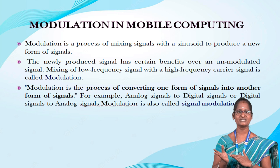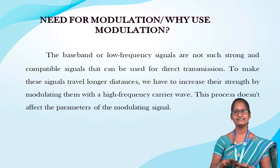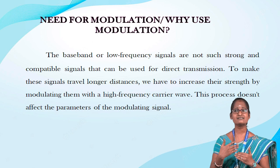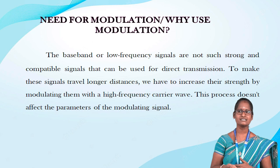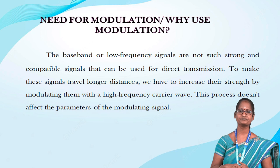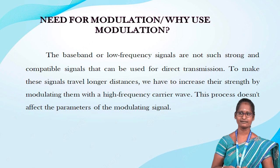Why do we use modulation? The baseband or low frequency signals are not strong and compatible with signals that can be used for direct transmission. To make the signals travel longer distances, we have to increase the strength by modulating with a high frequency carrier wave. This process does not affect the parameters of the modulating signal. Modulation is used to make the message-carrying signal strong enough to be transmitted over a long distance and establish reliable communication. A high frequency signal can travel up to a longer distance without getting affected by external disturbances.